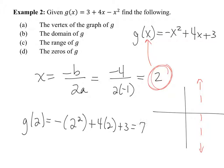Plugging 2 in for x, we're going to get 7. So I go over 2, up 7. The vertex is now at 2 comma 7. We get that because we plug in 2 from the axis of symmetry to give us 7.